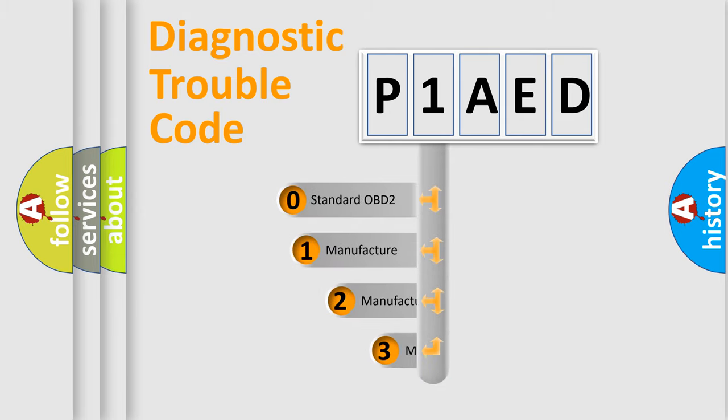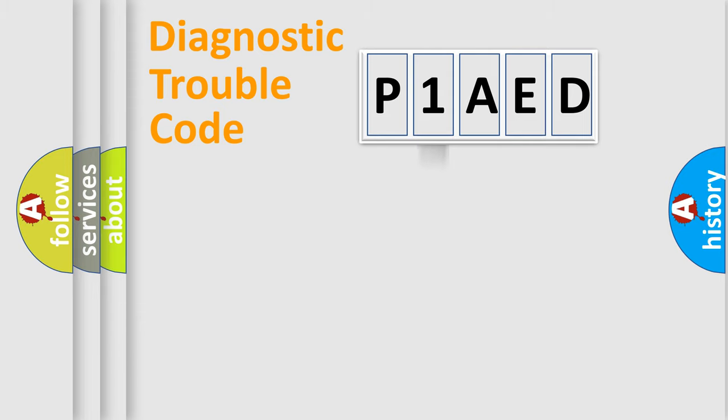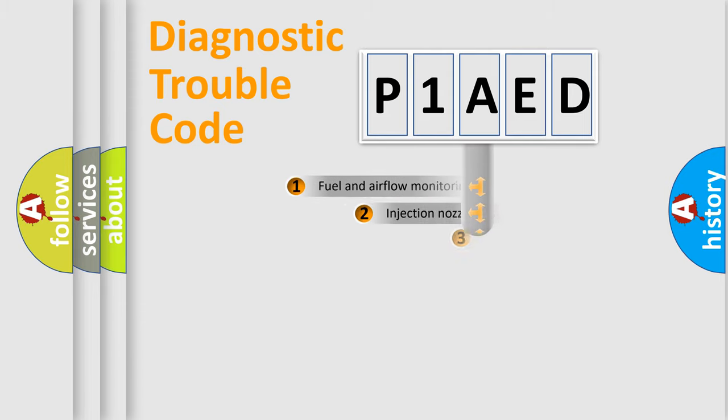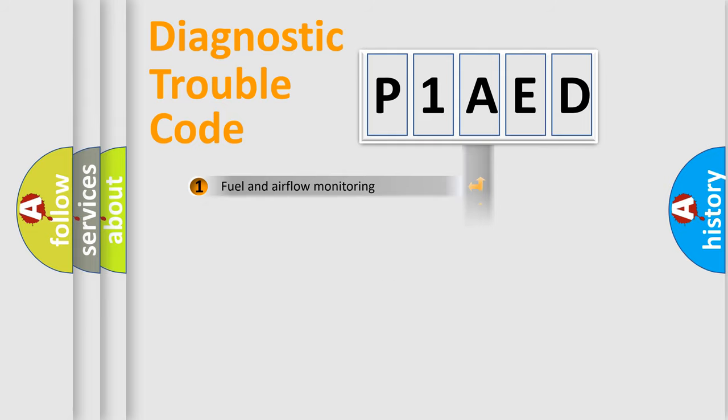If the second character is expressed as zero, it is a standardized error. In the case of numbers 1, 2, 3, it is a car-specific error. The third character specifies a subset of errors. The distribution shown is valid only for the standardized DTC code.